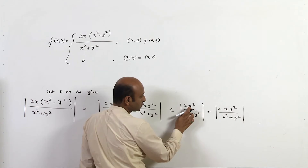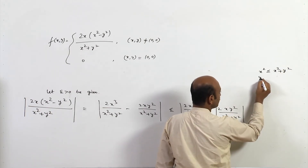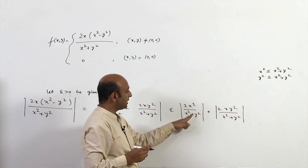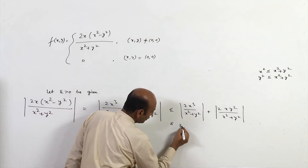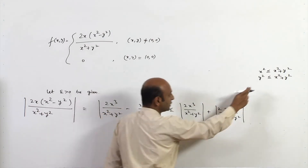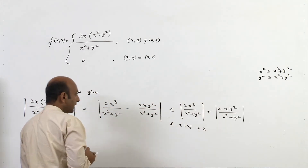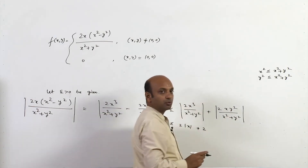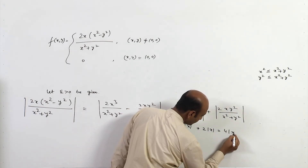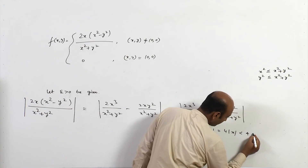Since x² ≤ x²+y² and y² ≤ x²+y², we have x²/(x²+y²) ≤ 1 and y²/(x²+y²) ≤ 1. Therefore |2x³/(x²+y²)| ≤ 2|x| and |2xy²/(x²+y²)| ≤ 2|x|. So the entire expression is less than or equal to 4|x|. Since |x| < δ, we get the bound of 4δ.